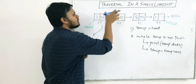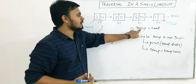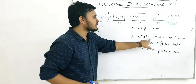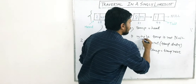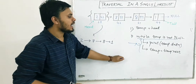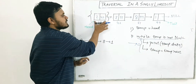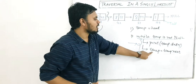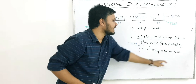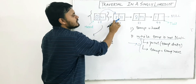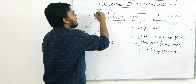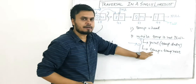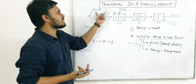Let's apply this code to our linked list. Initially the value of temp will be equal to the head node, which is not null, so the condition is true and we get inside the loop. We print temp.data, which is 2. Next, temp becomes temp.next, which points to the second node — let's call it N2.